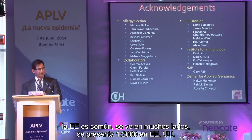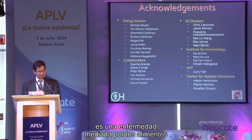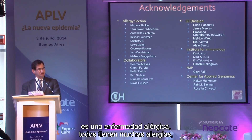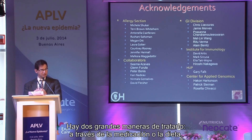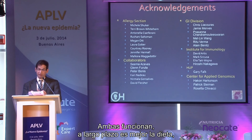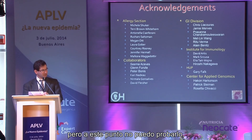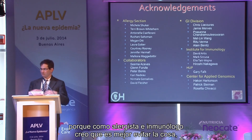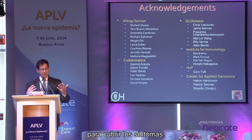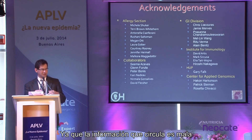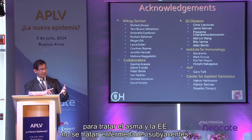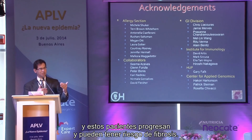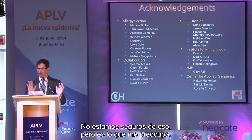To conclude: EOE is common, seen in about 1 in 2,000 in the United States. It is a food-mediated allergic disease in over 90% of cases, and affected patients carry a heavy burden of other allergies. A subset will have seasonal-induced symptoms. Treatment falls into two categories — medication (topical steroids) or dietary elimination — and both work. Long-term I believe diet is better because it addresses the underlying cause rather than masking symptoms, and ongoing inflammation even with topical steroids may still lead to progressive fibrosis.